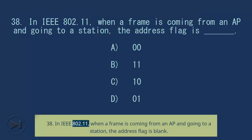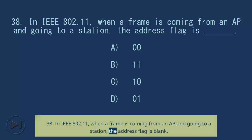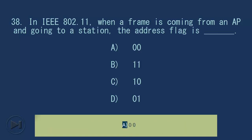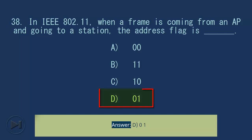Question 38: In IEEE 802.11, when a frame is coming from an AP and going to a station, the address flag is blank. A. 00, B. 11, C. 10, D. 01. Answer: D. 01.